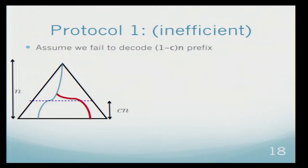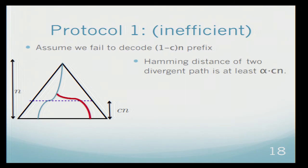However, now we have two paths that start at the same node. So the labels of these two paths have large Hamming distance. Specifically, their Hamming distance is at least alpha cn because their length is at least cn.